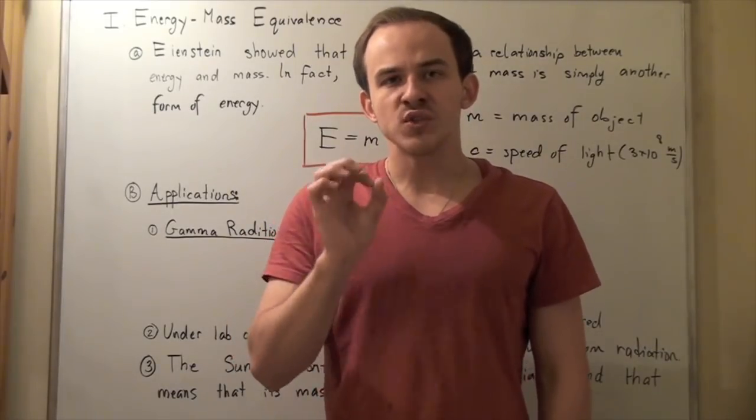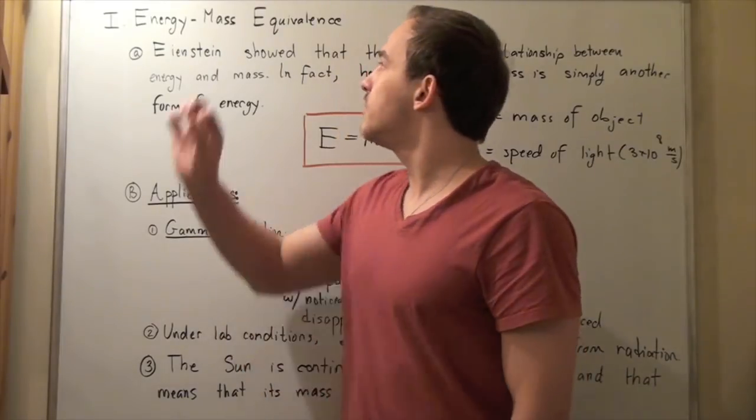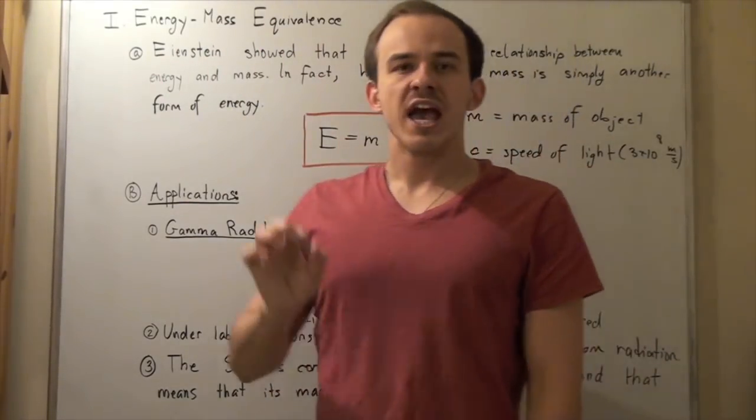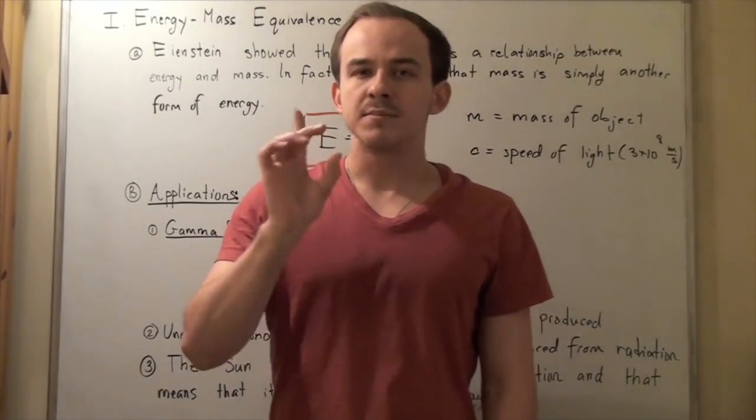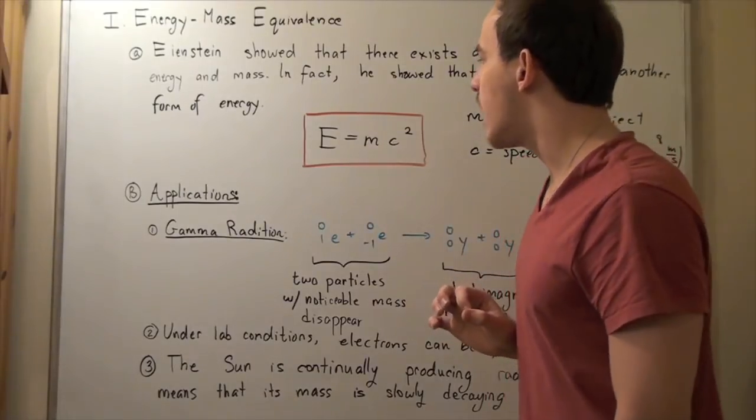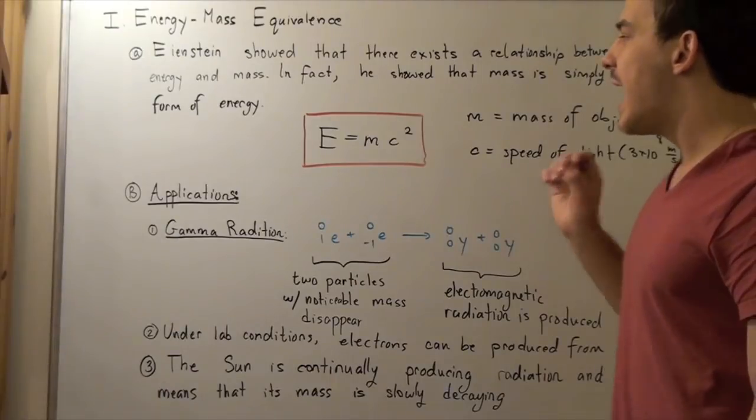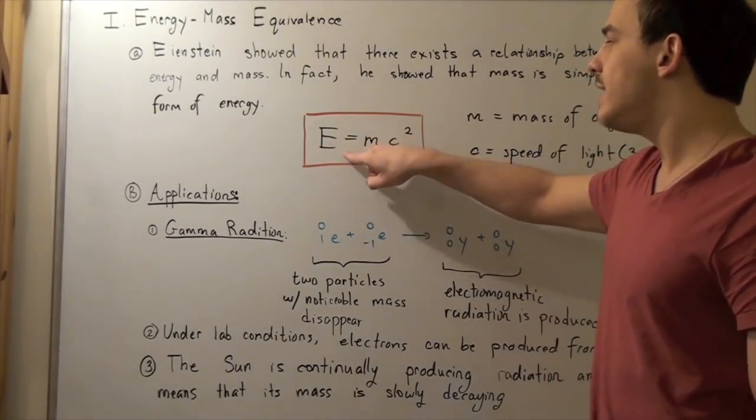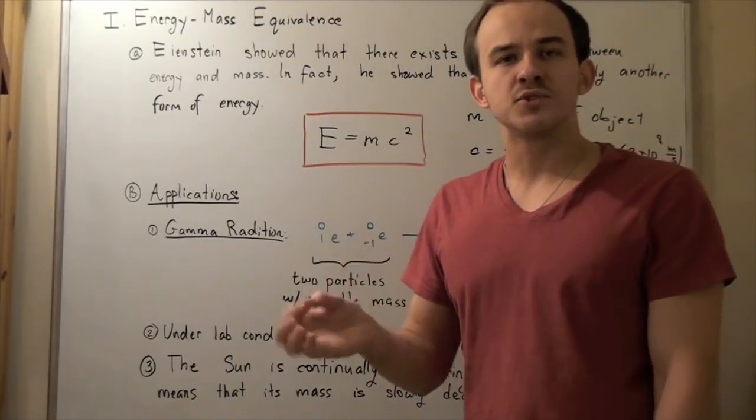He was also able to derive a mathematical formula for this concept, for this energy-mass equivalence, and he derived it from the kinetic energy of an object. I'm simply going to give you the end result, which is known as the rest-mass energy of an object, and it's given by E equals mc squared, where m is the mass of our object in kilograms.